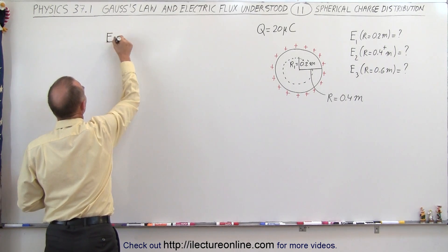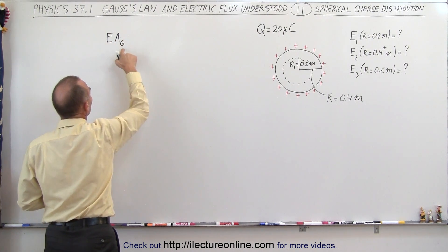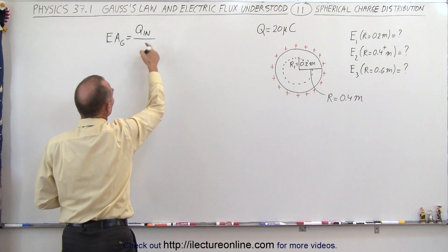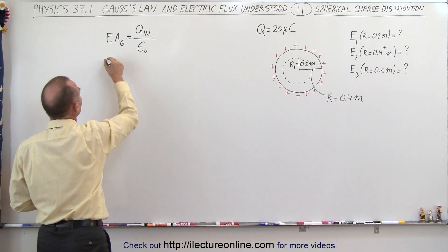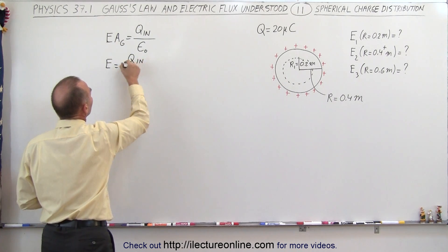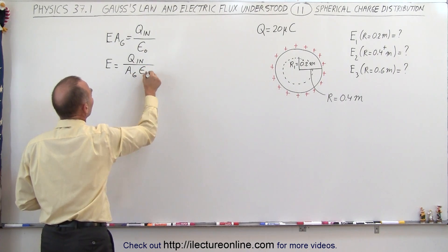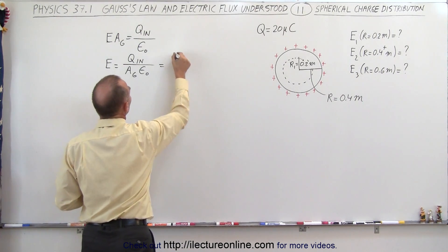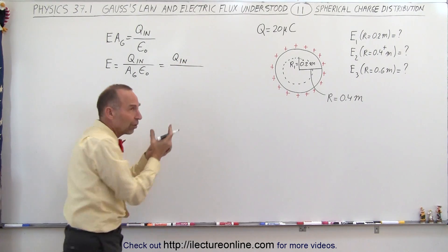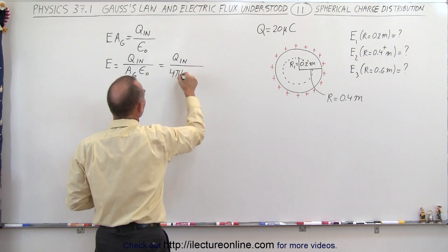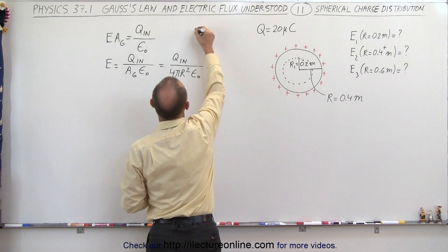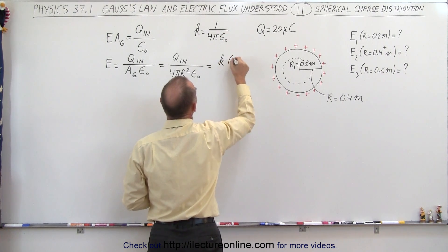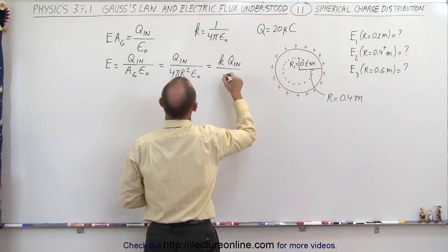Gauss's Law states that the electric field times the area of the Gaussian surface equals the charge Q enclosed inside that Gaussian surface, divided by epsilon-naught. So E equals Q-inside divided by the area of the Gaussian surface times epsilon-naught. Since it's a sphere, the area is 4πR², so this becomes K times Q-inside divided by R², since K equals 1 over 4π epsilon-naught.